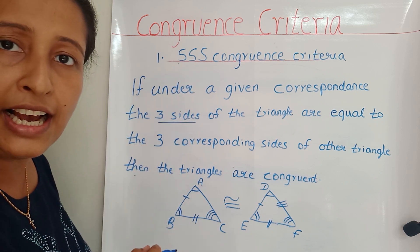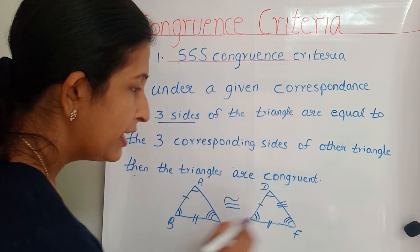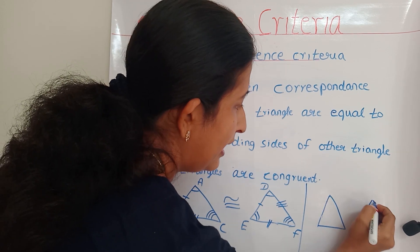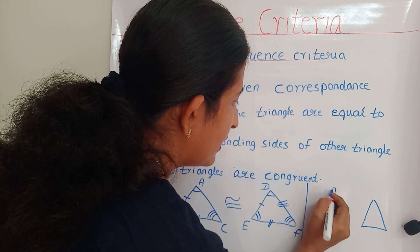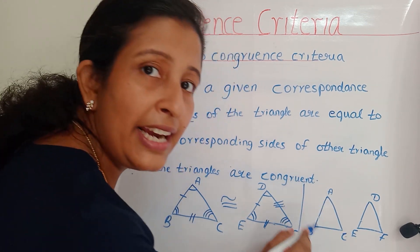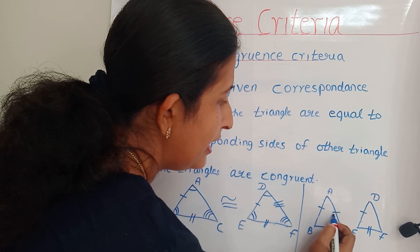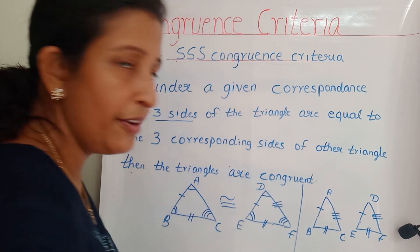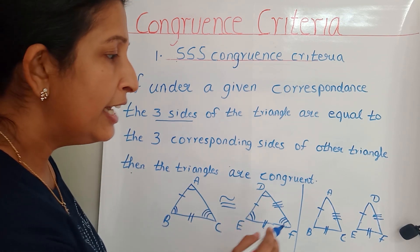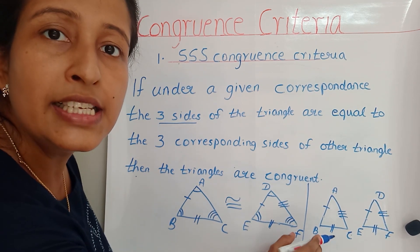Now from the SSS criteria, we don't have to check the angles at all — we only have to check the three sides. Triangle ABC is congruent to triangle DEF if AB equals DE, BC equals EF, and AC equals DF. After studying the SSS congruence criteria, we can very easily check whether two triangles are congruent without checking the angles.